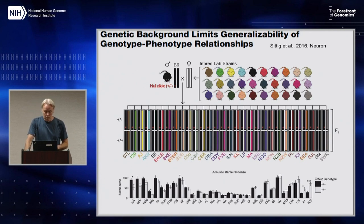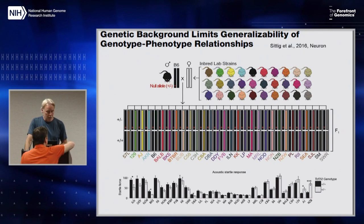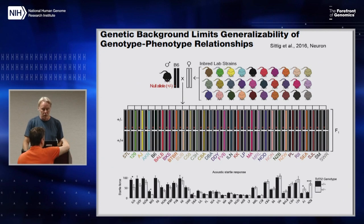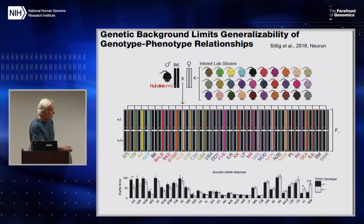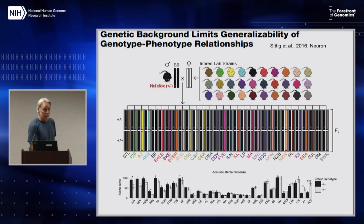and by crossing this heterozygote to a number of strains, he generates a whole panel in which, among other things, one has littermate controls. These animals are heterozygous, and these animals are basically wild type for the mutation. Every one of them is an F1 hybrid.